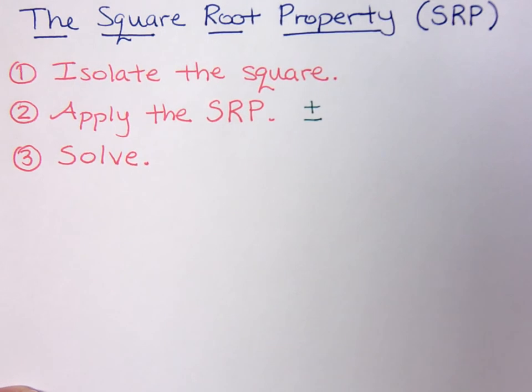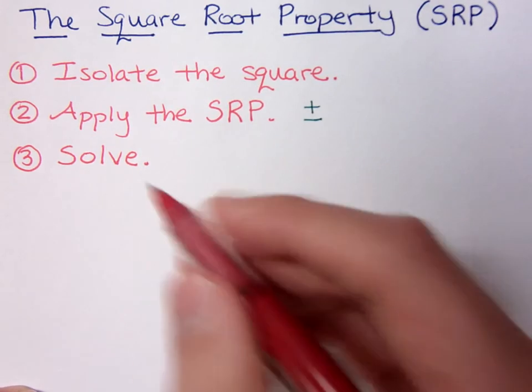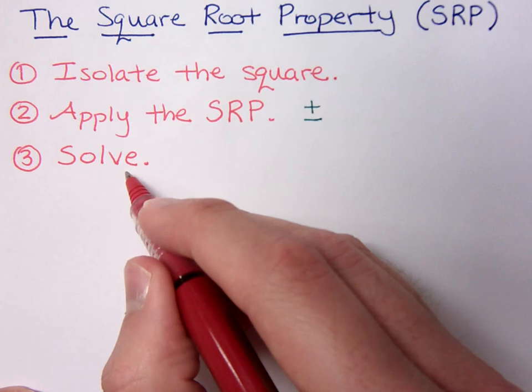After you've applied the square root property, you've kind of broken it down a level. You've probably brought the x item to a place where you can finally isolate that so that you can solve the equation.